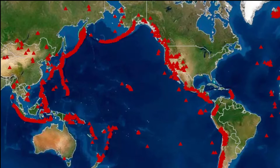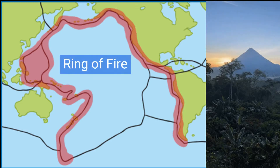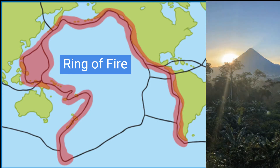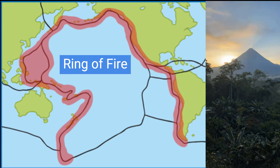Volcanoes are closely linked to the Ring of Fire because most of the world's volcanoes are located around its edges. These volcanoes form because of the movement of tectonic plates beneath the earth's surface. The Pacific tectonic plate is one of the major plates on the earth's crust, covering a large portion of the Pacific Ocean including the Ring of Fire area. The Pacific plate is constantly moving and interacting with other plates along its edges.